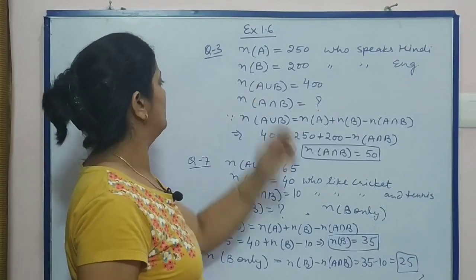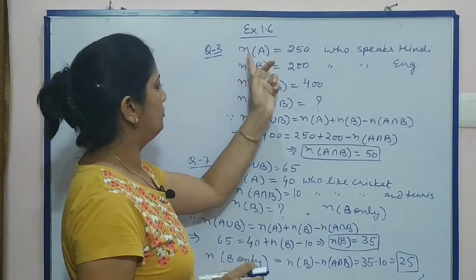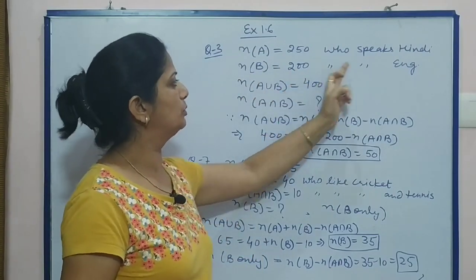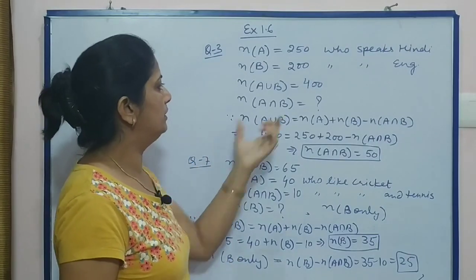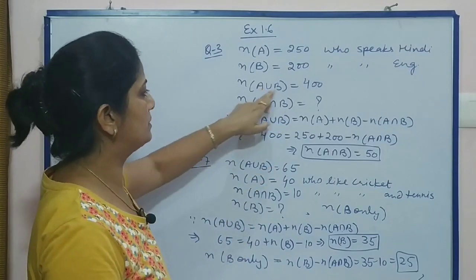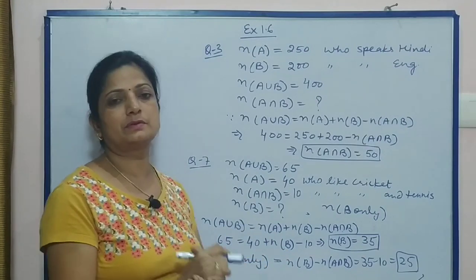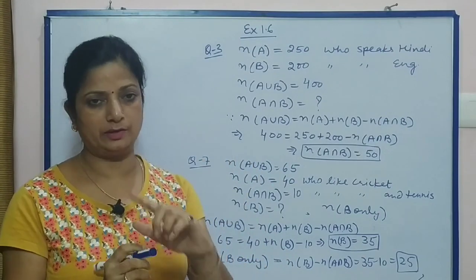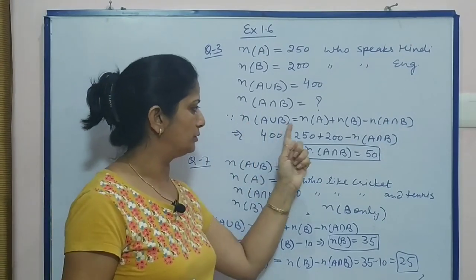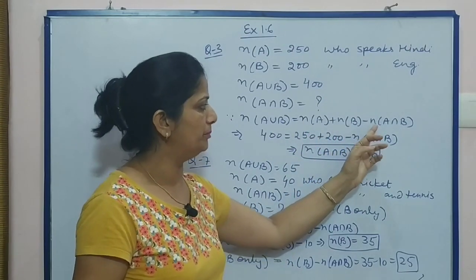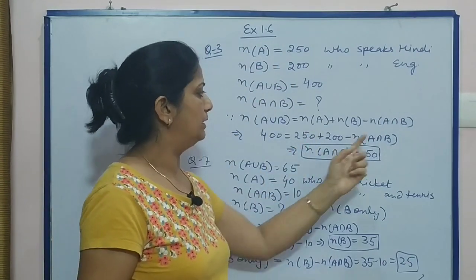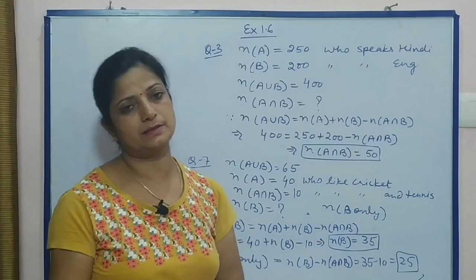Now Question 3 of Exercise 1.6: number of A — people who speak Hindi — is 250; number of B — who speak English — is 200; total persons are 400 who speak either Hindi or English, meaning A union B. We need to find the number who speak both, meaning A intersection B. We apply the formula: n(A∪B) = n(A) + n(B) - n(A∩B). With 4 terms and 3 given, we substitute values and get the intersection value, which is 50.